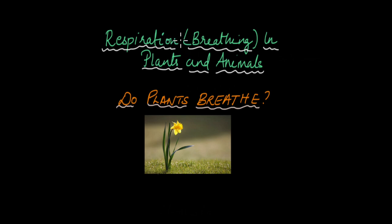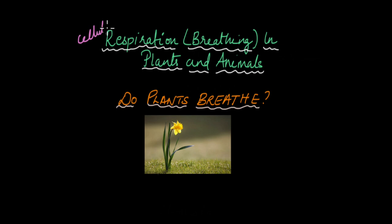In this video, we're going to talk about the different mechanisms different plants and animals use to breathe in air and breathe out air. You have to understand the distinction between respiration and breathing. Breathing is the process by which gas is exchanged with the environment, and respiration is the process by which oxygen — in most cases — is used to produce energy by breaking down glucose. That is cellular respiration. The process by which organisms take in oxygen and leave out carbon dioxide is known as breathing.